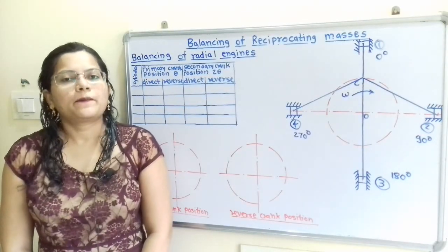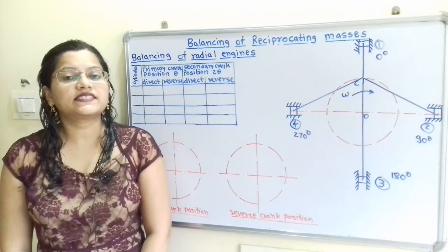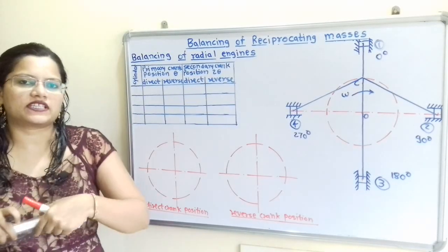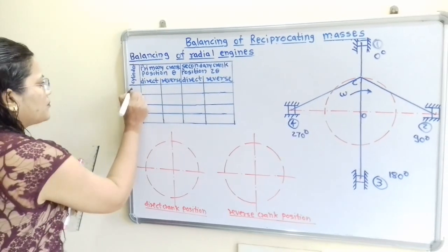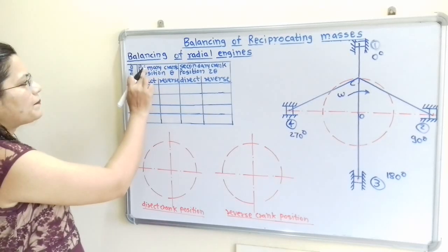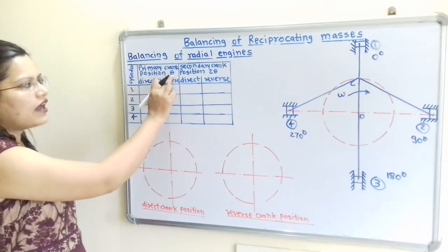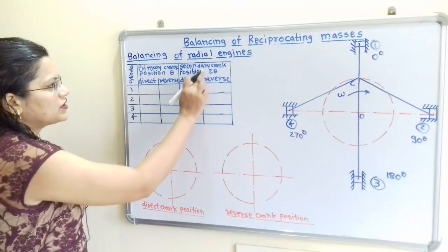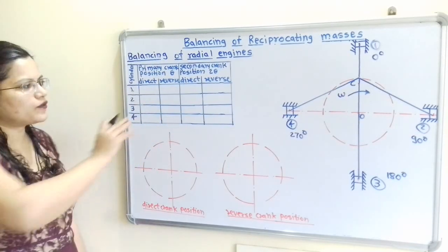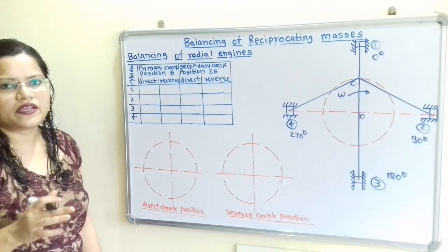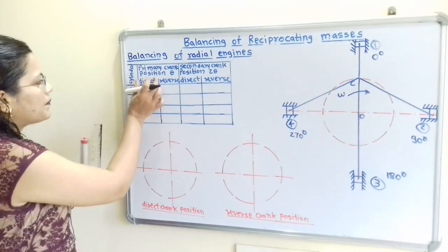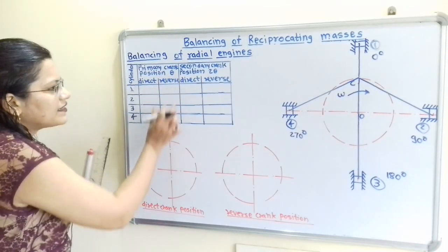To calculate primary and secondary unbalanced forces, we prepare a table. The first column lists the number of cylinders — 4 total. The next column gives the primary crank position theta, and the following column gives the secondary crank position 2-theta. For each, we prepare two sub-columns: Direct Crank and Reverse Crank.